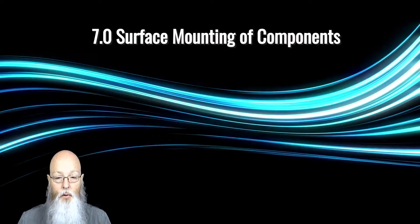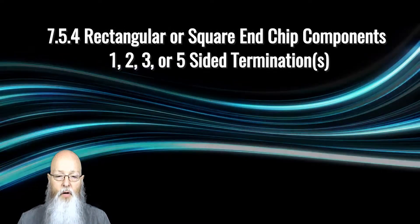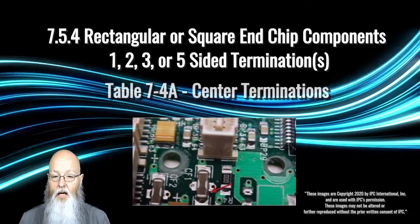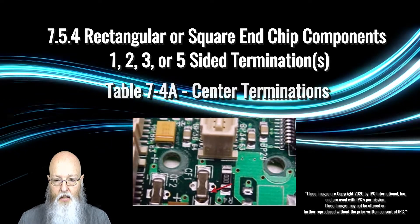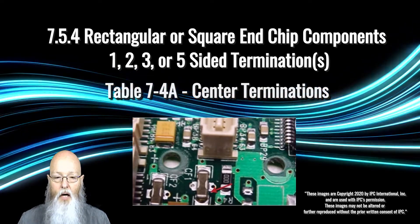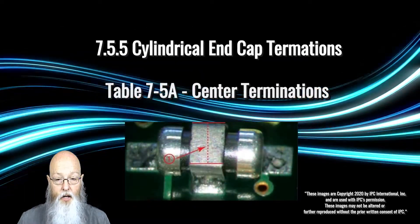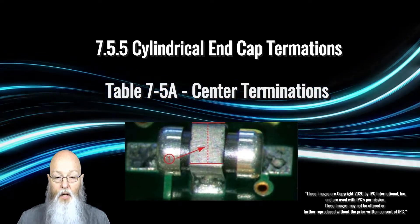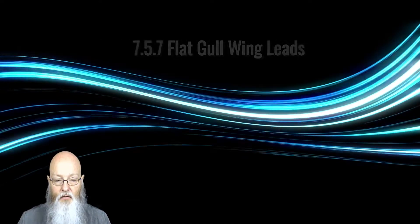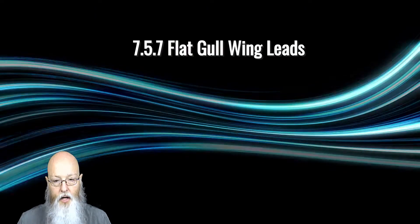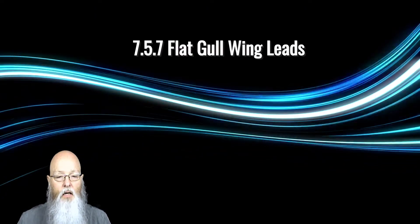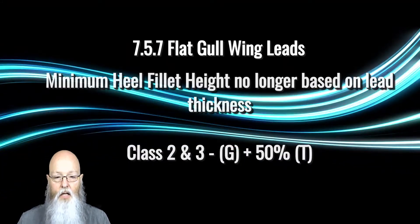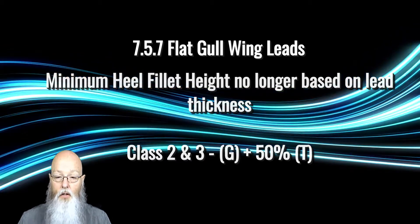Paragraph 7 has some notable additions and changes. The first is in 7.5.4, criteria for square side terminations, or one, two, three, or five-sided chip components. The criteria is the same as what's in 6.10, so this is likely a synergy alignment for the two documents. The same side termination criteria has been added to 7.5.5 for the round cylindrical components, more commonly known as MELF components. Moving to 7.5.7 flat gullwing leads, some consideration and breakout of criteria have taken place. Revision G had a breakout of the minimum heel fillet based on lead thickness. Revision H has consolidated this back into a single criteria, regardless of lead thickness.